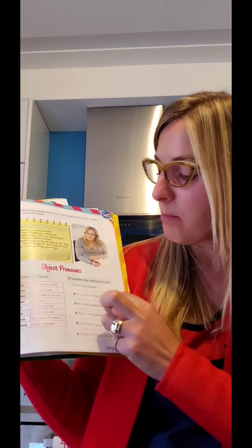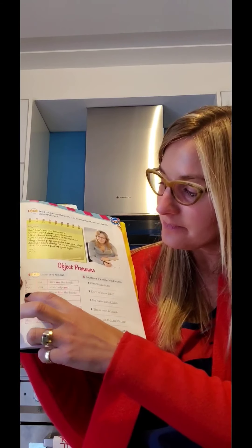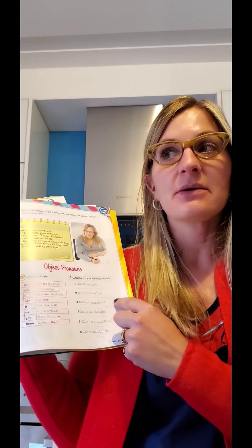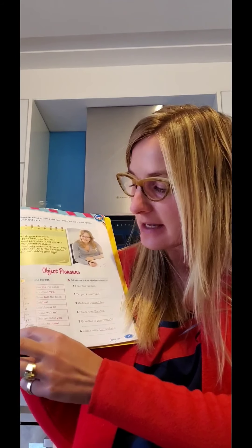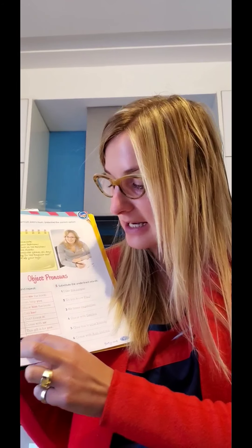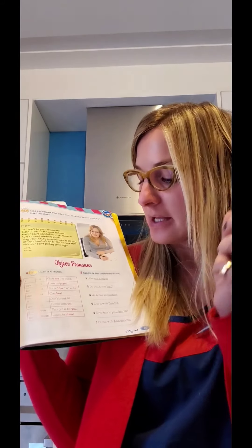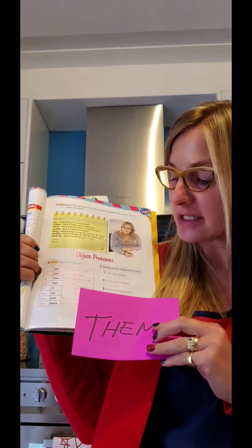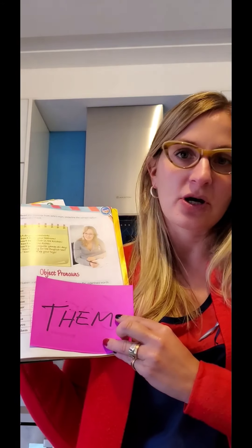Go to number two — do you know Paul? Paul es varón, es he, y el pronombre objetivo es him. Entonces: do you know him? — ¿lo conoces a él? He hates vegetables — los vegetales es plural, sería they, y el pronombre objetivo es them. Entonces: he hates them — él odia los vegetales, los odia a ellos.